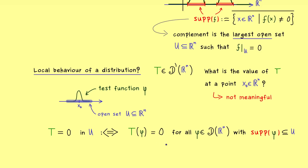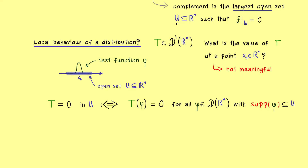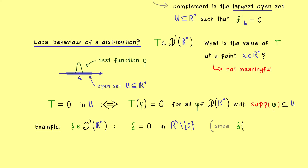It does not matter how large the test function's values get, because we only require the distribution to give zero. Now let's look at an example: the delta distribution. It's not hard to see that delta is zero outside of the origin, so we write delta equals zero in R^n without the origin. The reason is that delta(φ) = φ(0), so if zero is not in the support of φ, we get zero. Moreover, R^n without the origin is the largest open set where delta equals zero, so the support of the delta distribution is just the origin.